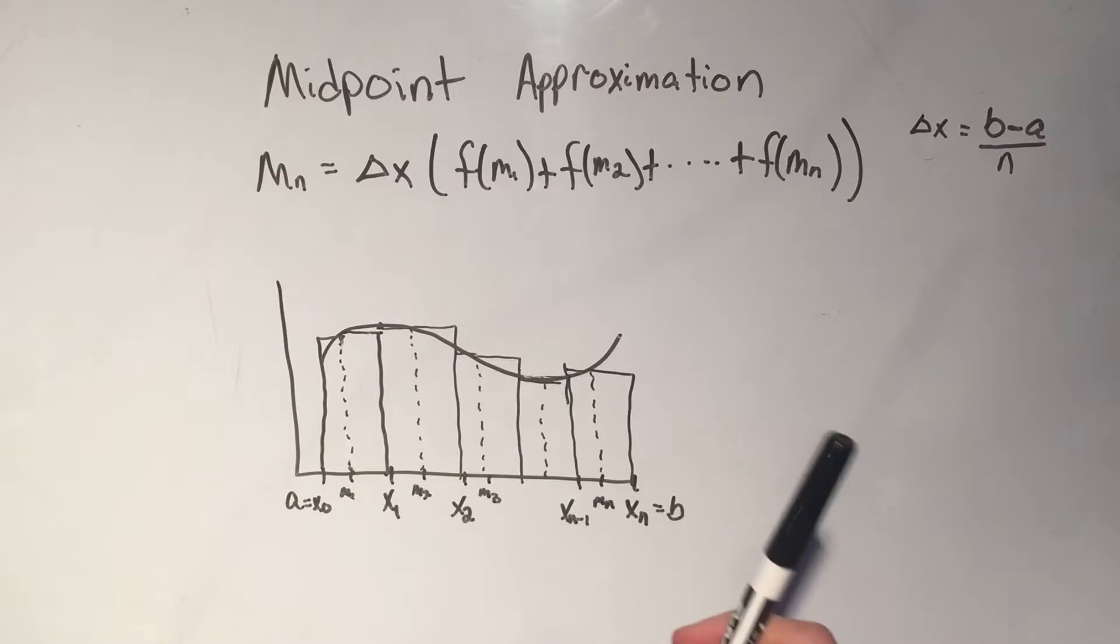So instead of picking all the right endpoints, or instead of picking all the left endpoints, we just take the average of all of those points. We just pick the point in the middle of all of our subintervals.